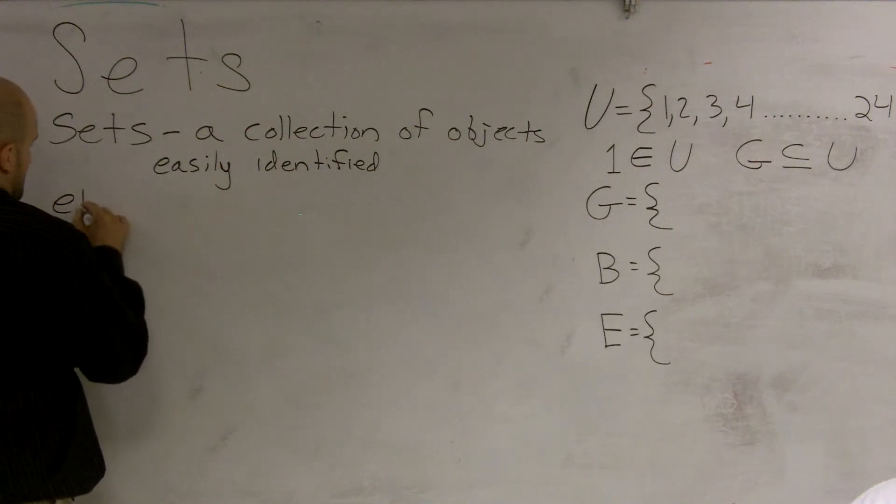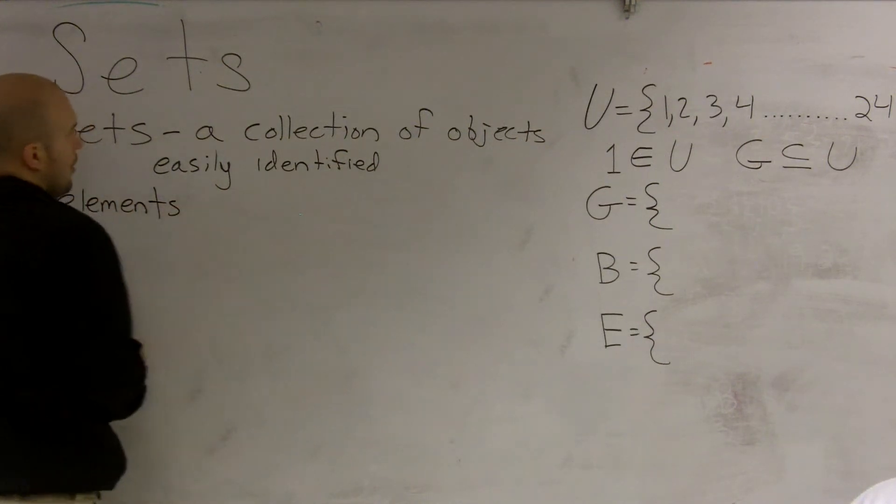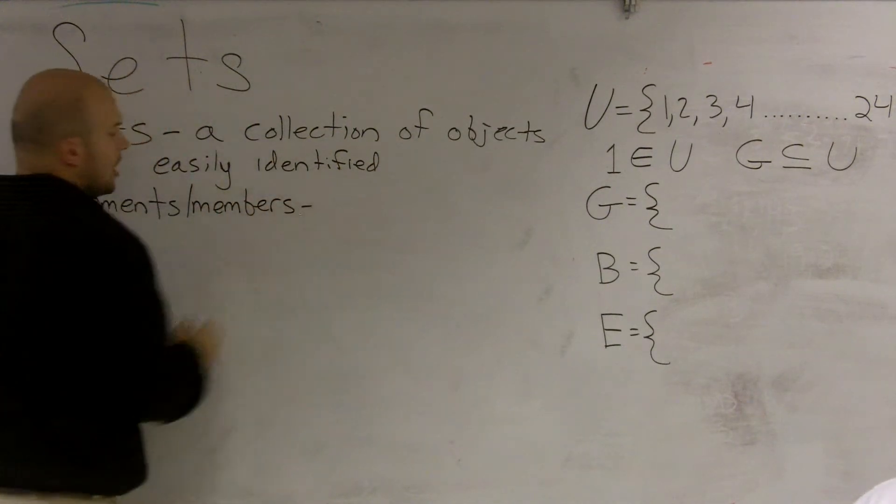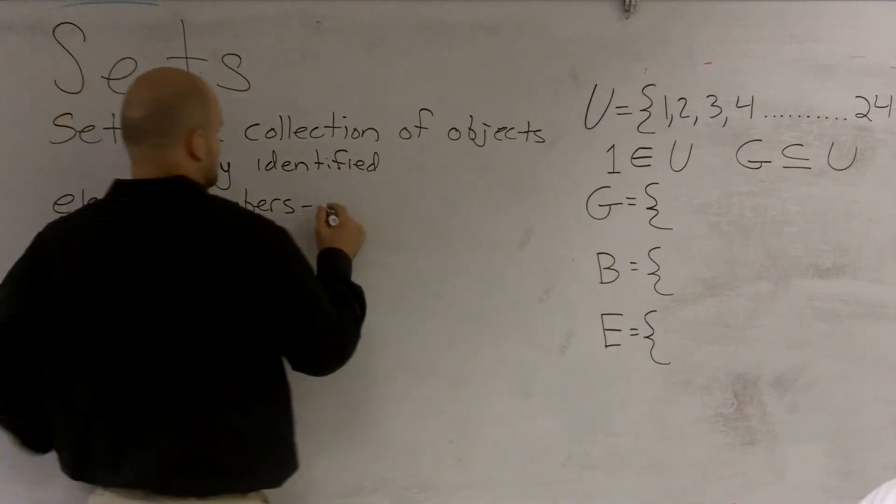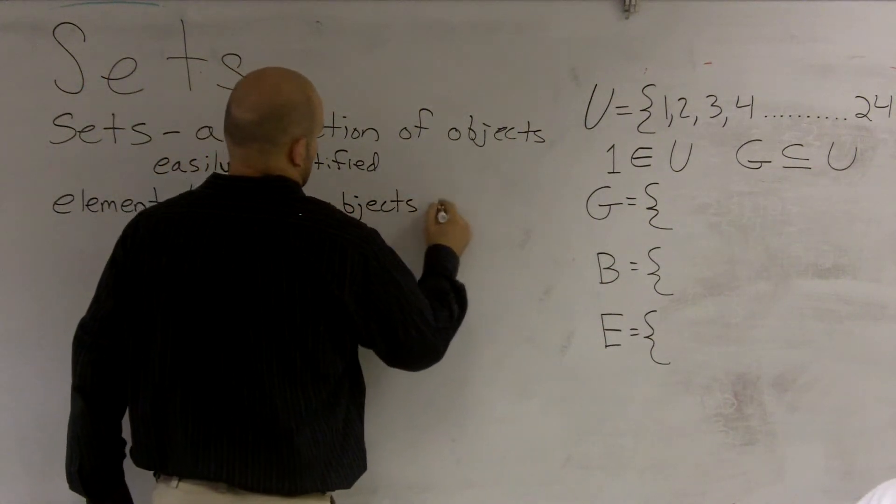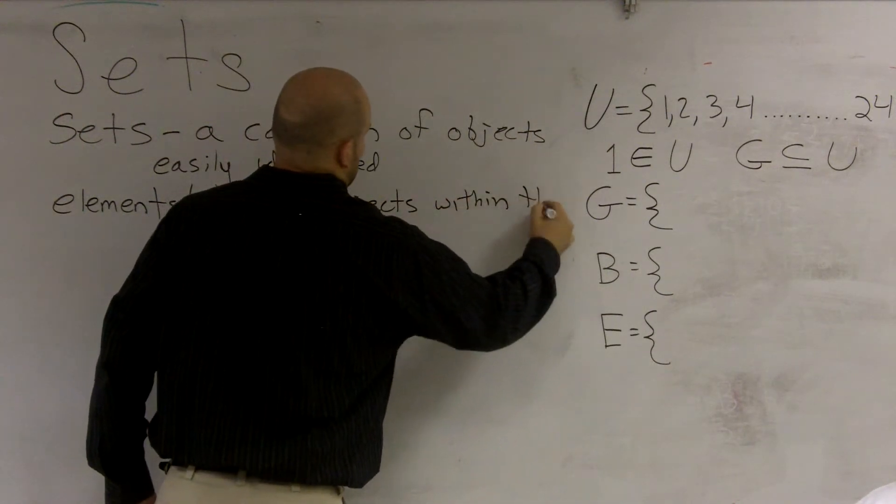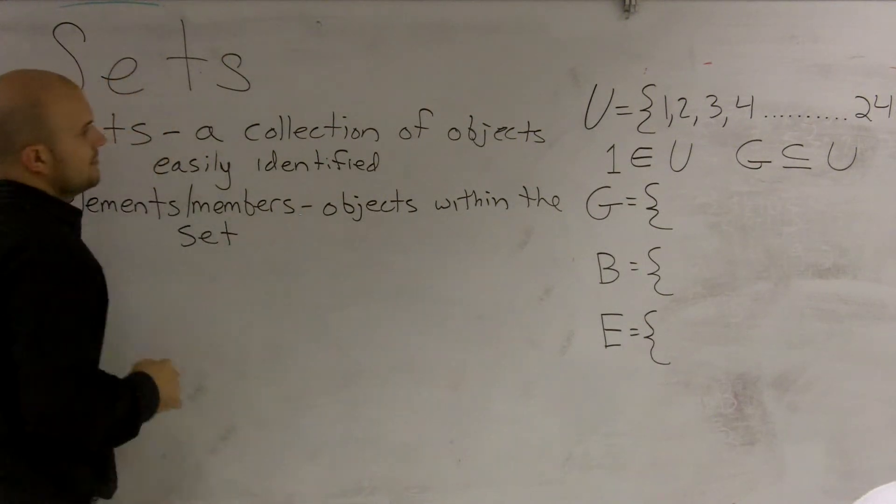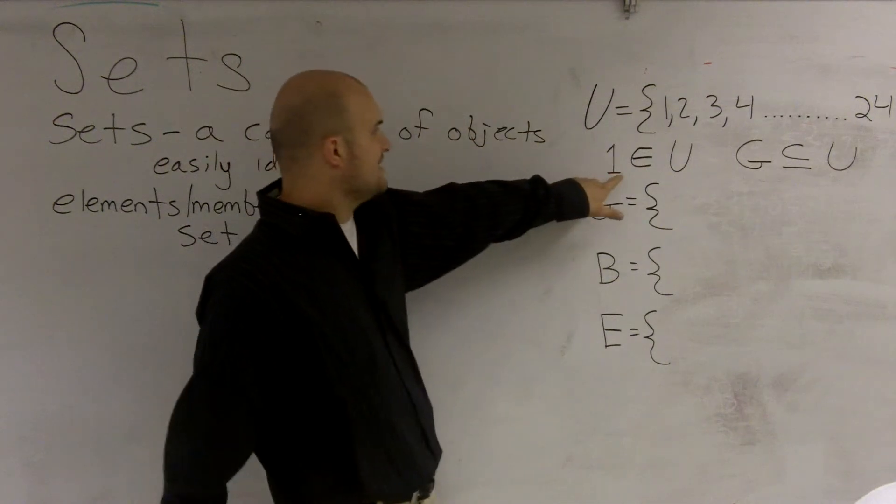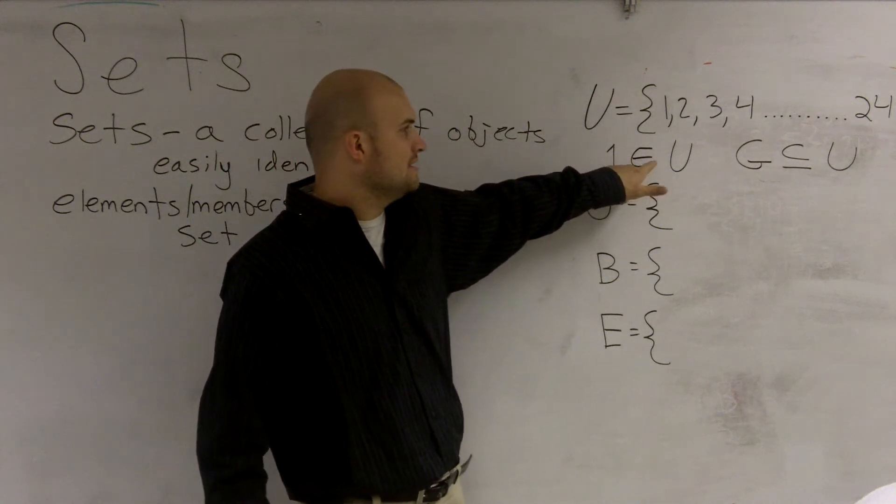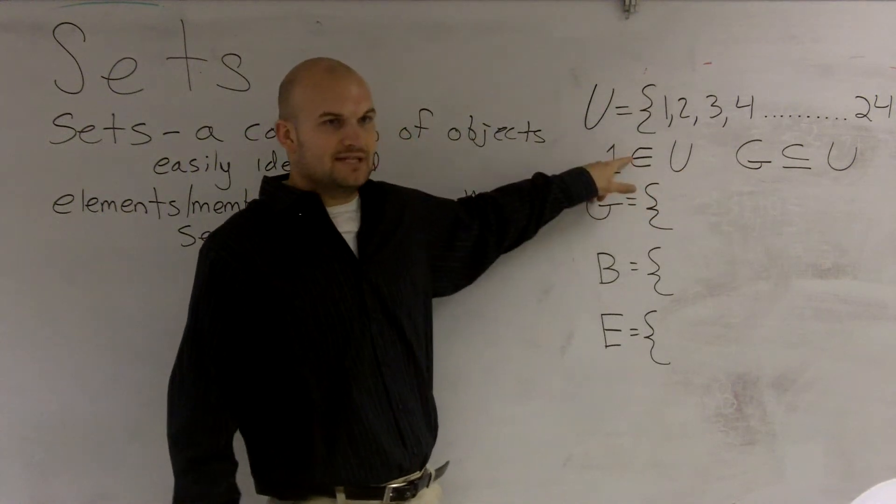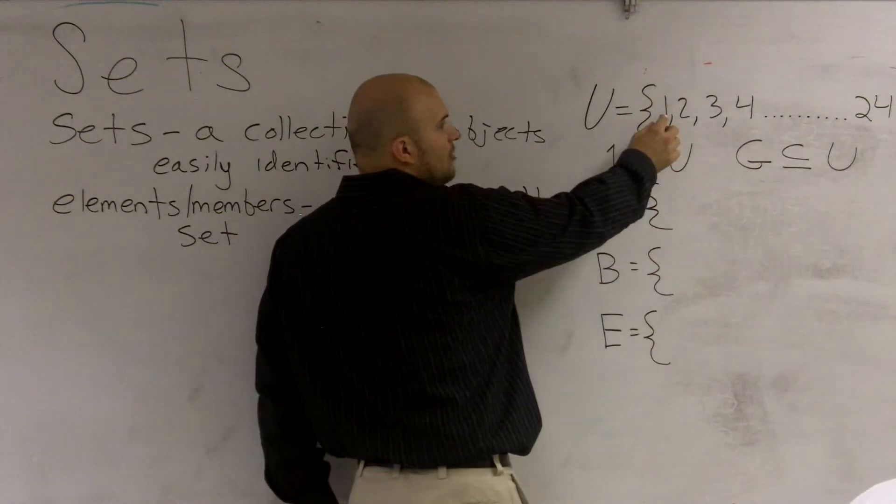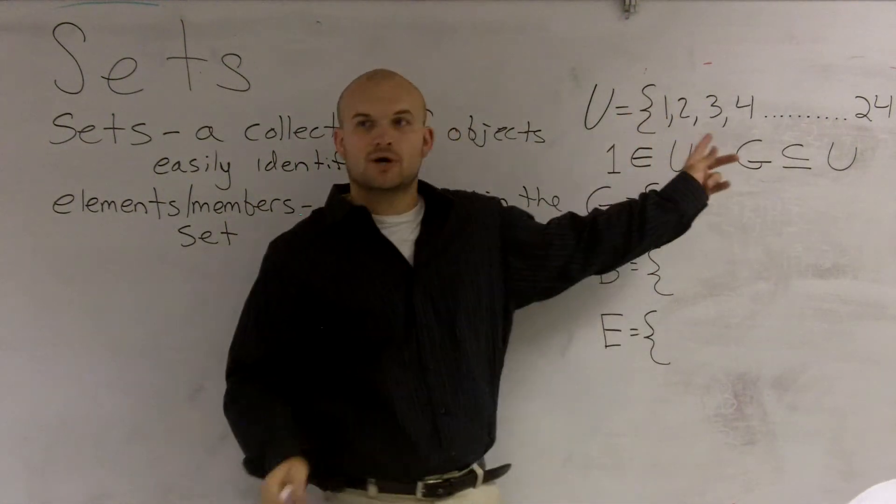And what we call elements, or members, are those objects that are within the set. So, let me just go through a quick example. I say element 1 that is contained in the set U. That's what this means. It's not a sideways E. It's 1 is contained in the set U. Because this number 1 is an element, right? 1 is a member of this set.